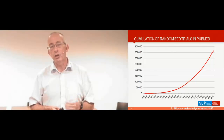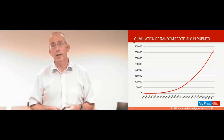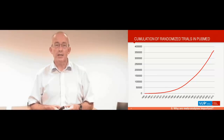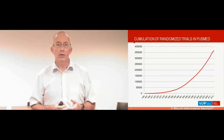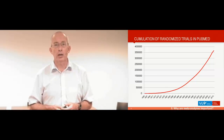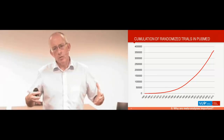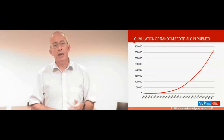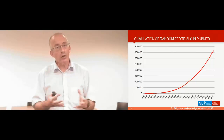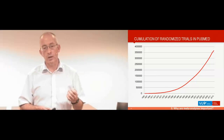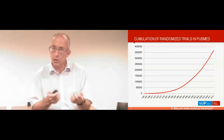What you see here is the accumulation of randomized trials identified over the years in PubMed. Since 1965, there is that exponential increase in randomized trials, with now more than 350,000 randomized trials in PubMed. So if we want to keep track of what happens in a specific subfield, we need methods to integrate those results into one overall estimate of what is happening in that field.